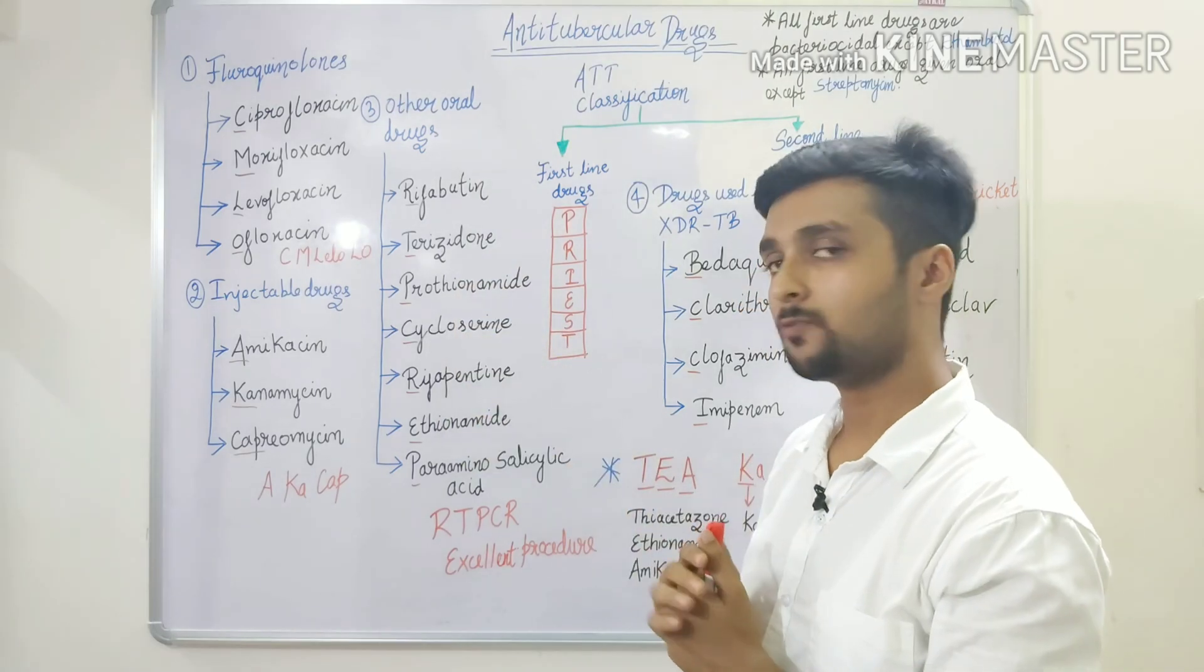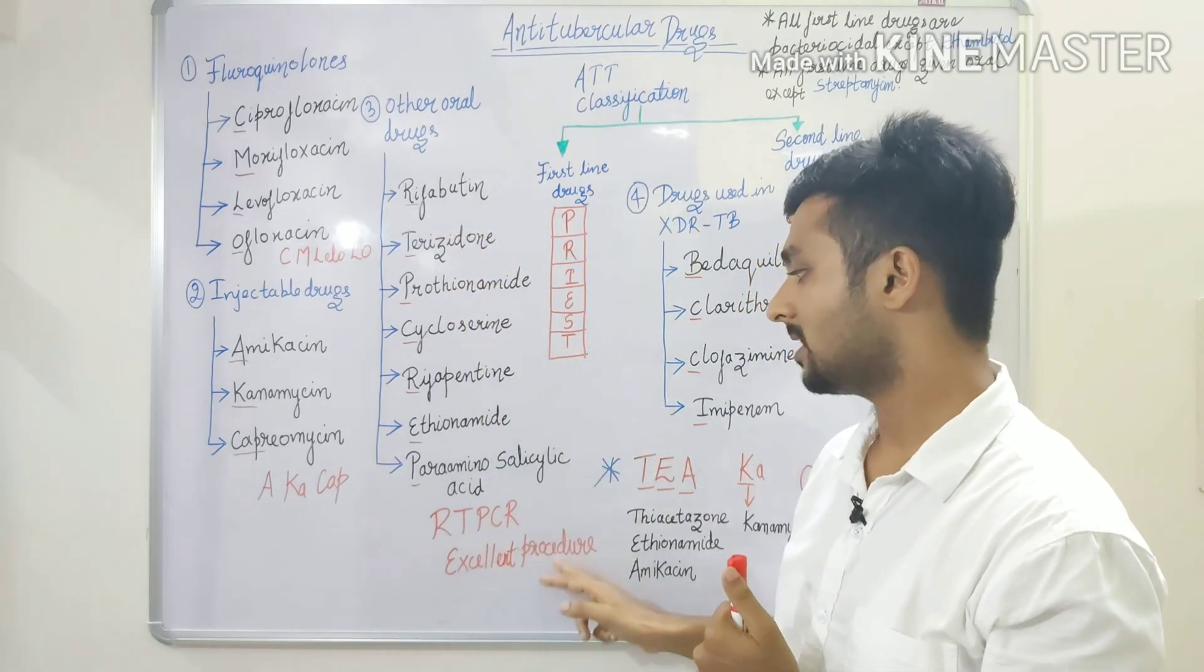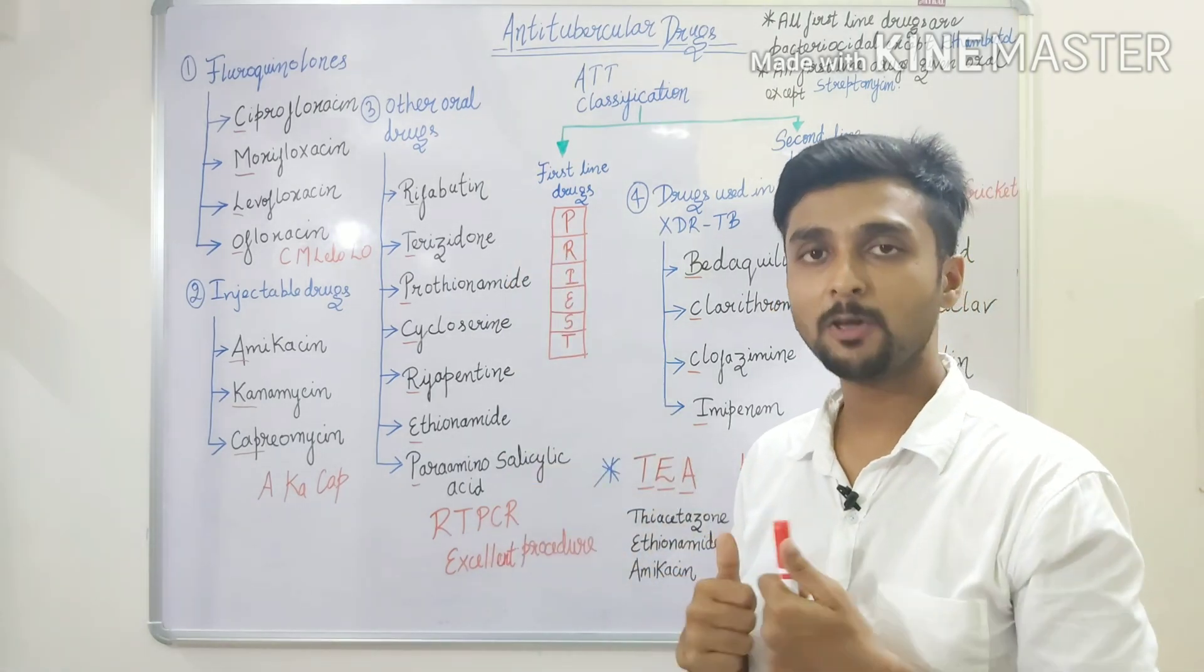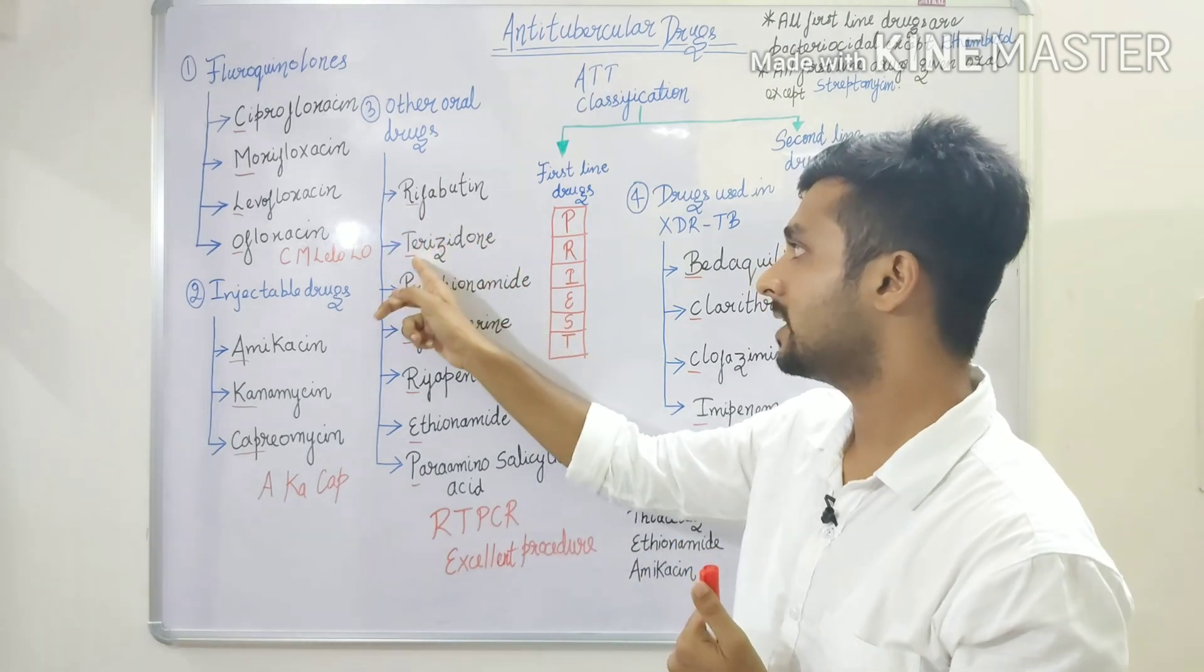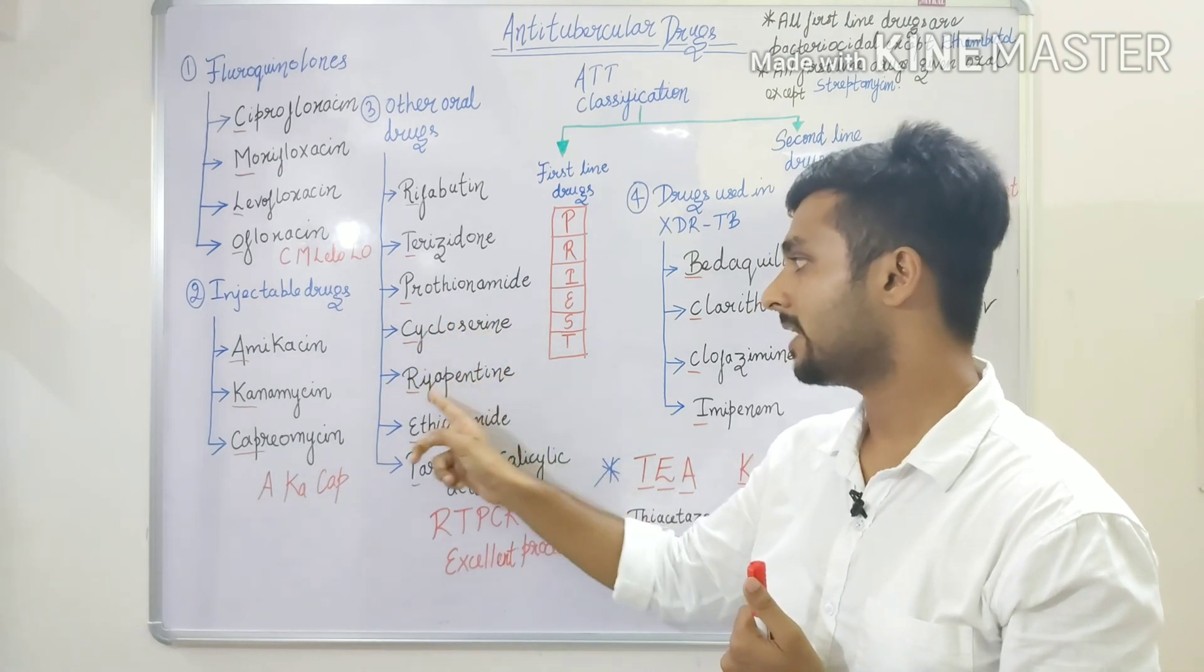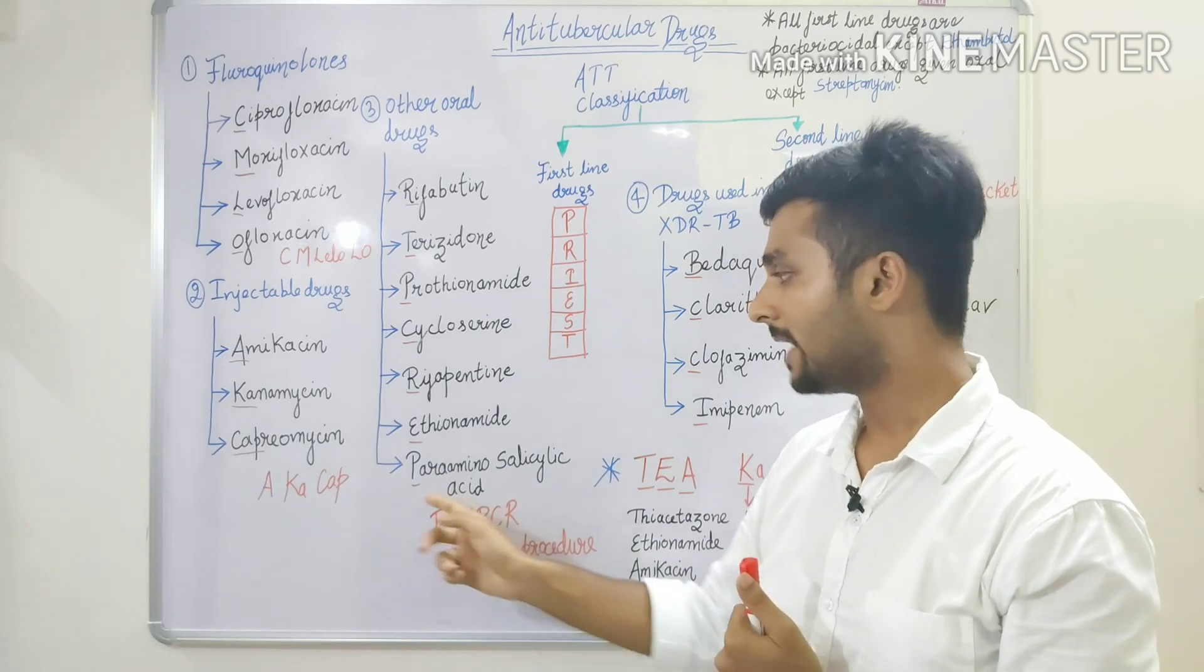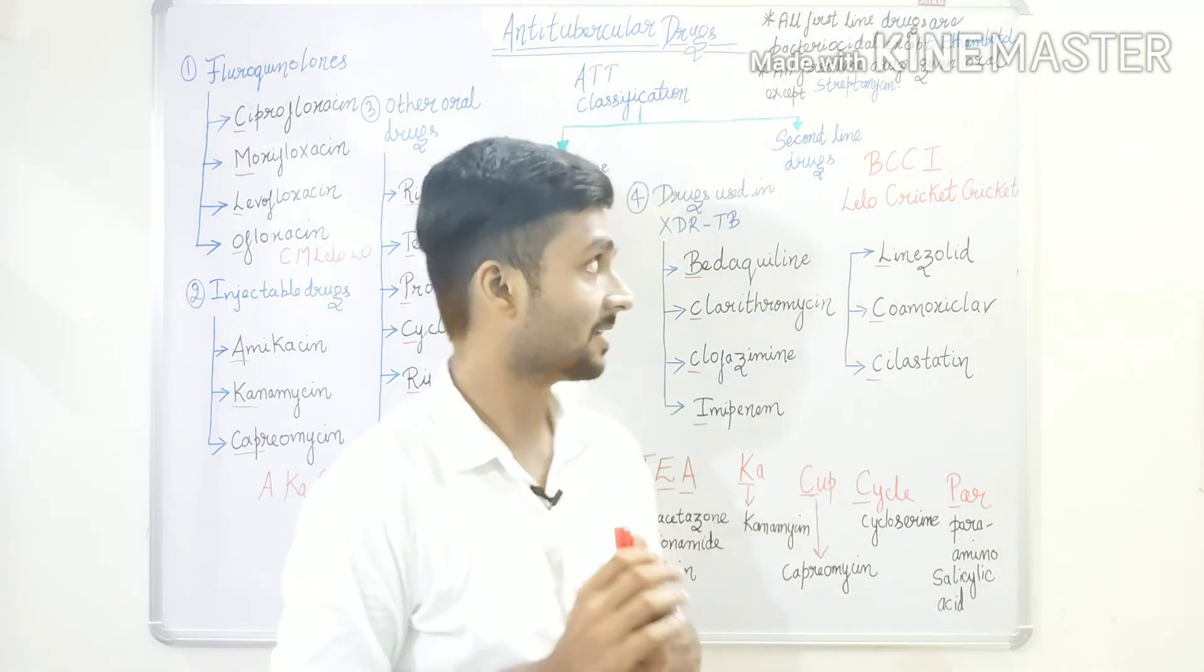Next is other oral drugs. We took the first word and made RT-PCR excellent procedure. RT-PCR is a type of lab procedure. So, R for Rifabutin, T for Terizidone, P for Prothionamide, C for Cycloserine, R for Rifapentine, E for Ethionamide, and P for Para-aminosalicylic acid. RT-PCR excellent procedure.